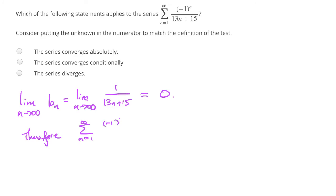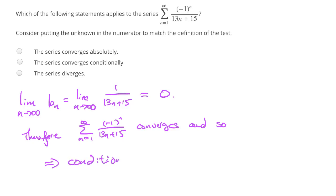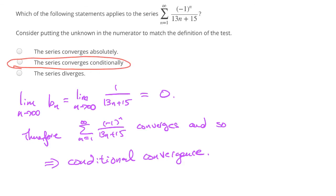The series (-1)^n / (13n + 15) converges, so we know that we have conditional convergence. Our final answer is that the series converges conditionally. I hope you've enjoyed this, and I'll see you in the next example.